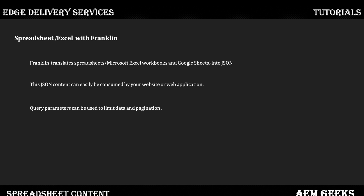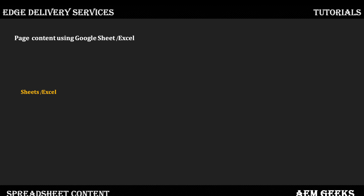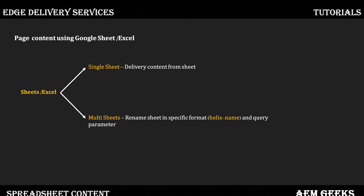You can use query parameters to access specific content and implement pagination. There are two scenarios possible: you can have only one sheet where all the content is stored, or you can have multiple sheets within a single file.